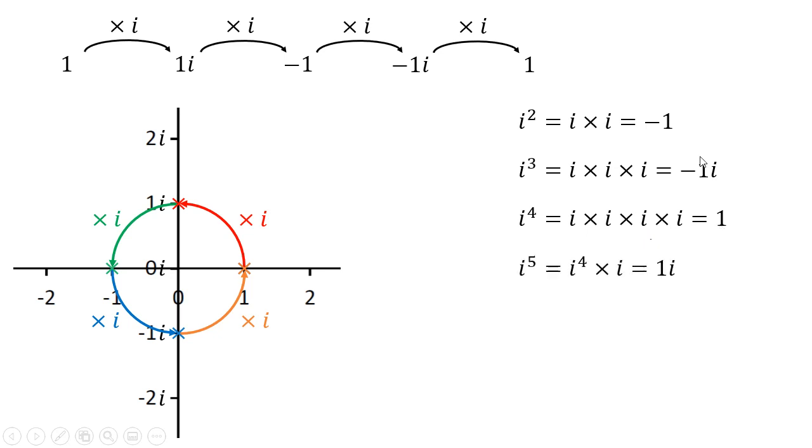When we go to higher powers we can think of this as being i to the four times i for when we have i to the five. And now we know that i to the four is one, so we've just got one times i. We can carry on this process and it makes it a lot easier to work out i to the power of a number for any number.